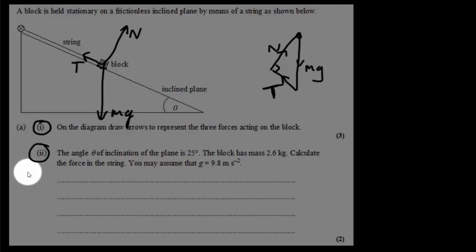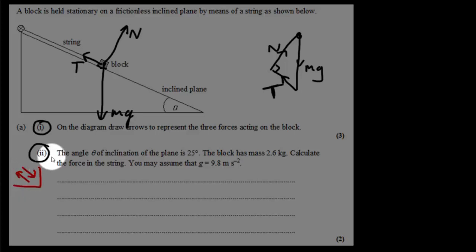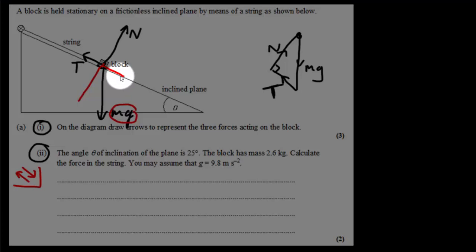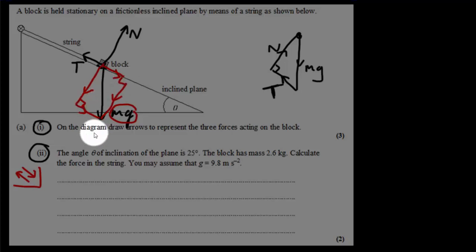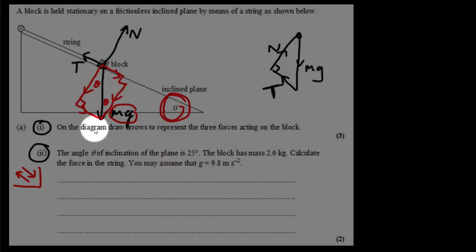For part two, we consider the forces along the ramp — all forces up and down the ramp. We take the mg weight force and break it into components perpendicular to the ramp and along the ramp, creating that parallelogram as before. The angle theta appears in the triangles — that angle there is theta, and likewise that angle there is also theta.